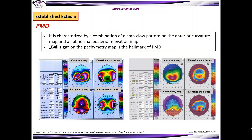PMD is characterized by a combination of a crab-claw pattern on the anterior curvature map and an abnormal posterior elevation map. The bell sign on the pachymetry map is the hallmark of PMD.